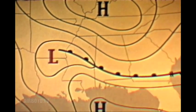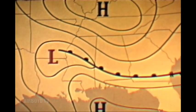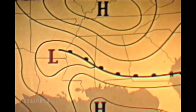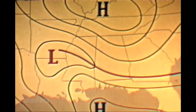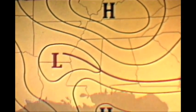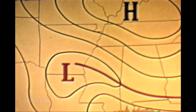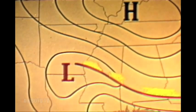Between the high-pressure area in the warm air and the high-pressure area in the cold air, the warm front lies in a trough of low pressure. Immediately along the front, the primary weather conditions are scud and prefrontal fog.